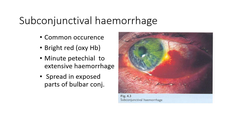Subconjunctival hemorrhage — or ecchymosis of the conjunctiva — is a very common occurrence. It may vary in extent from small petechial hemorrhages to an extensive one spreading under the whole of the bulbar conjunctiva, making the white sclera invisible.